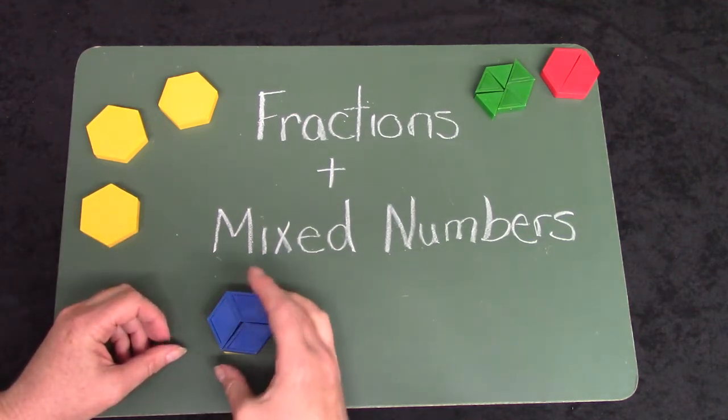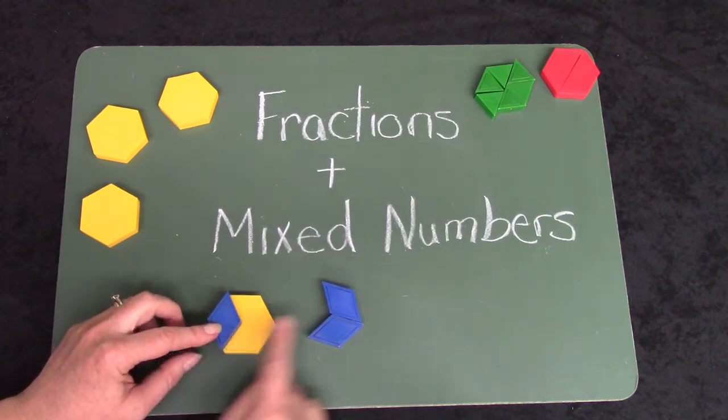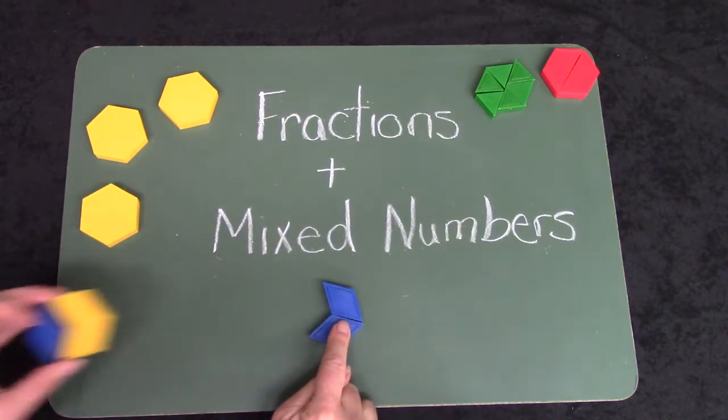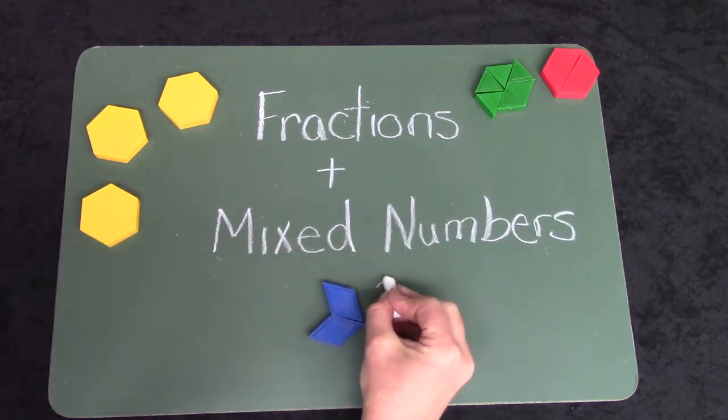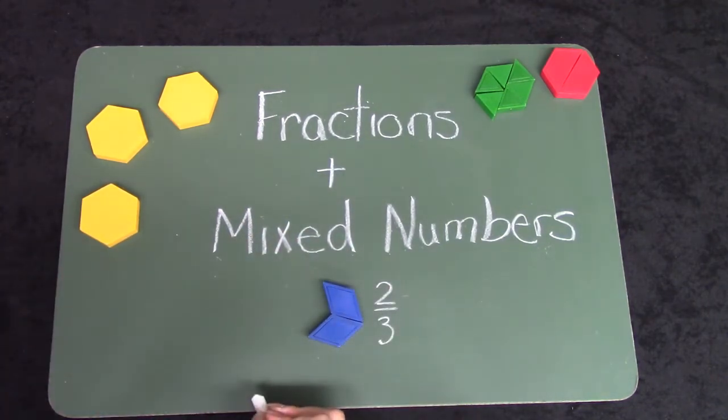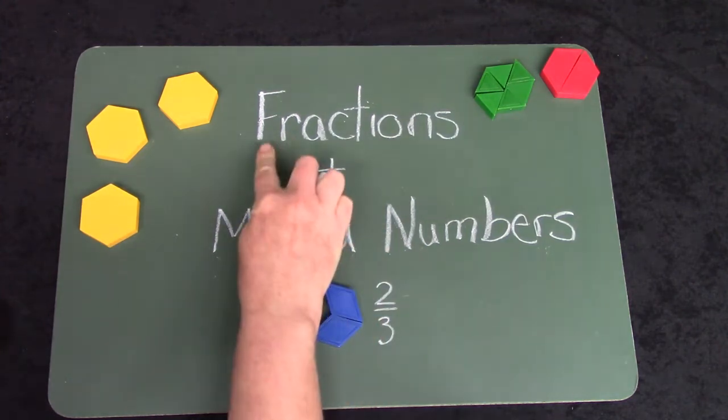And what if we only had two out of the three pieces? We would have less than one hexagon. We would have two out of the three pieces or two-thirds. And that's a fraction.